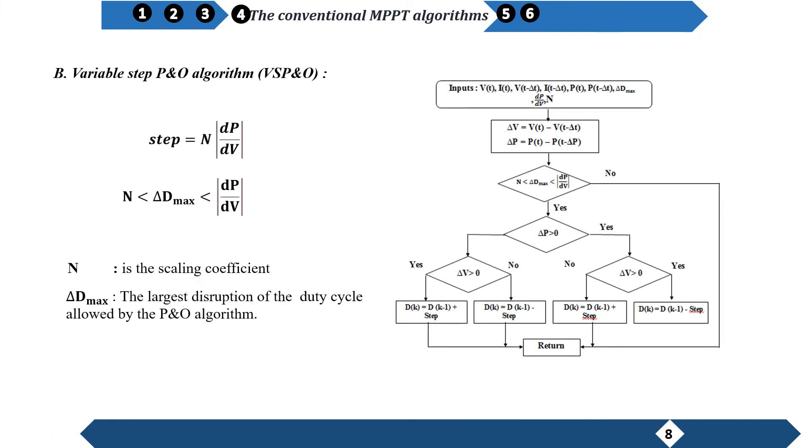Variable Step follows the same principle of the P&O algorithms by modifying the step size, the increments either by increase or reduction.